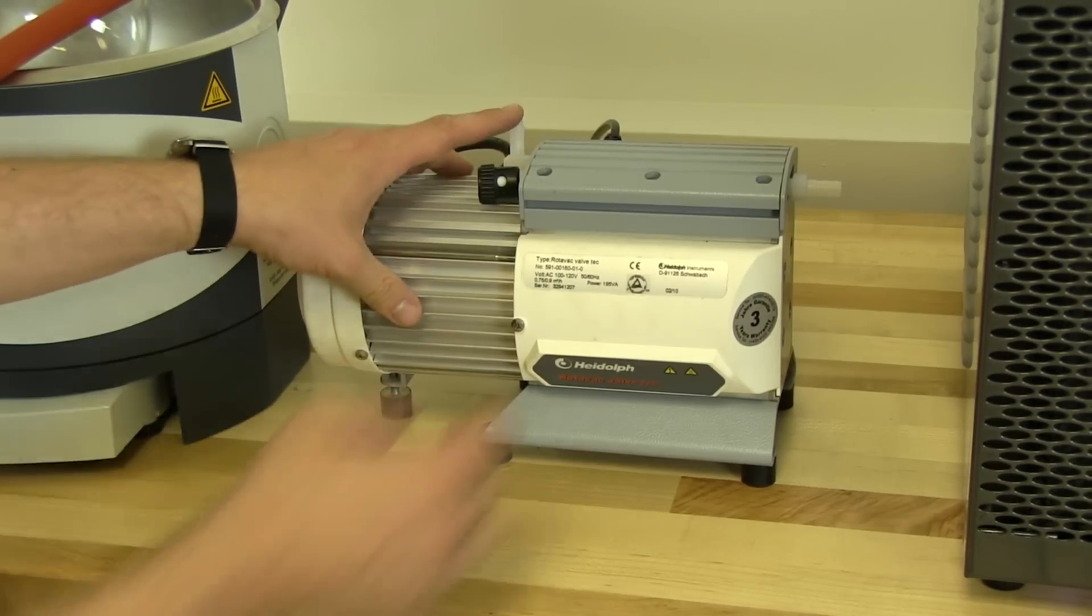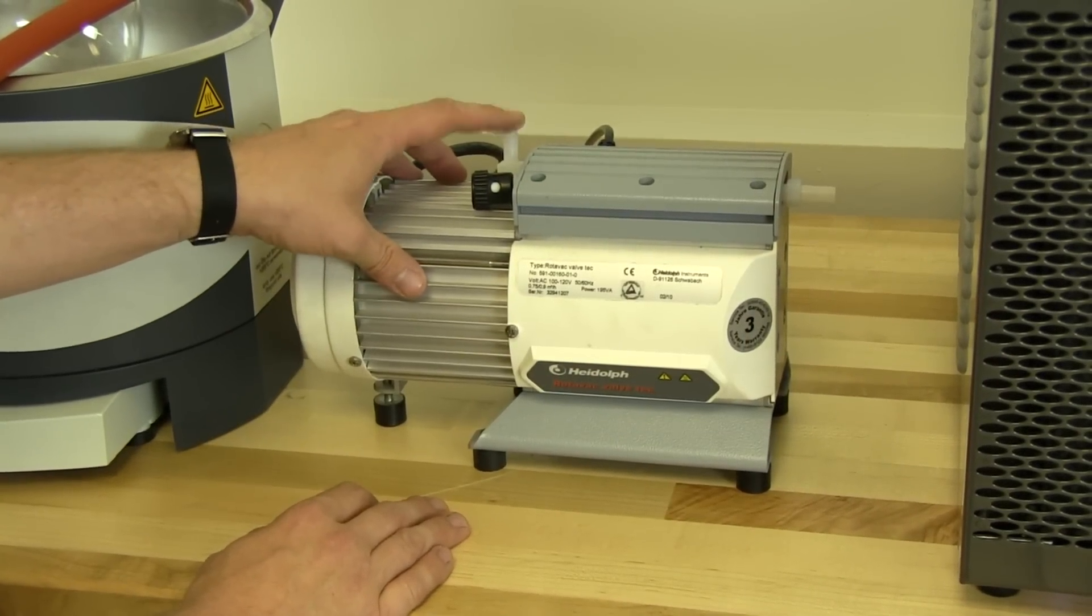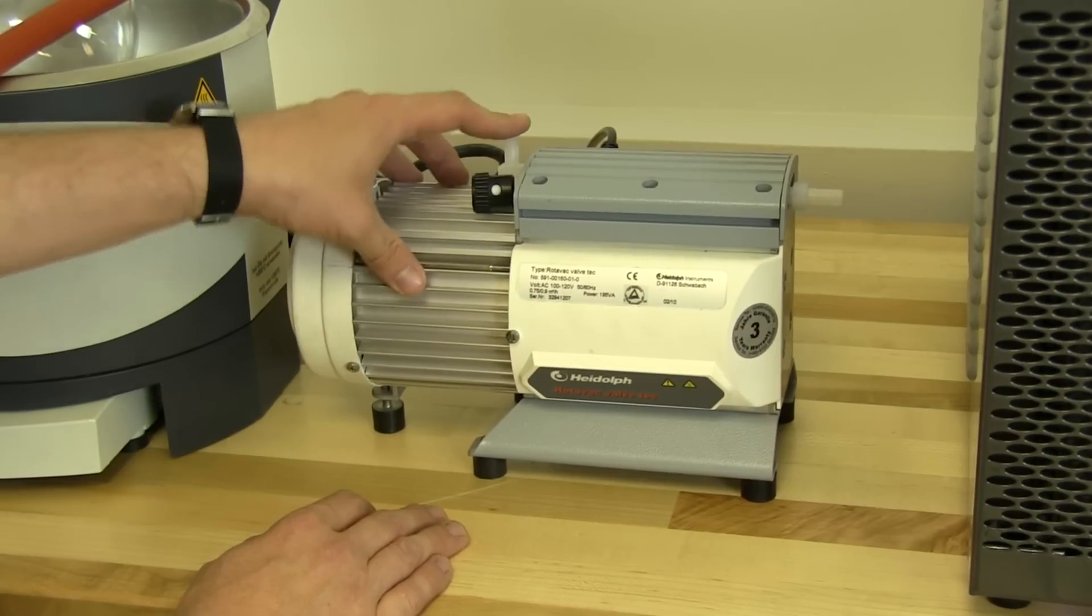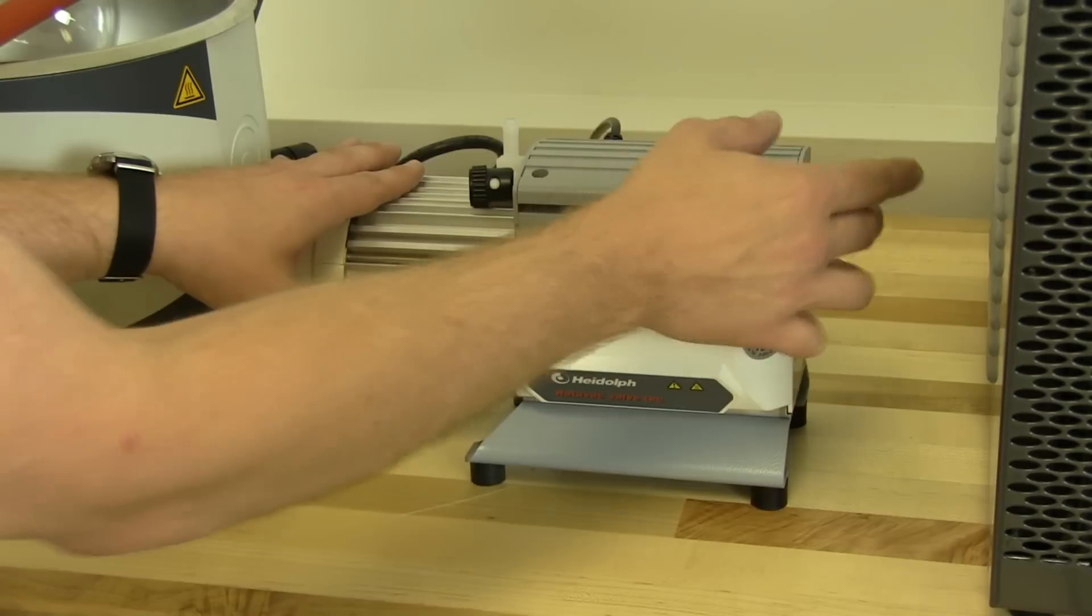So just turn the vacuum pump on if you're not sure, if it's not labeled which one is inlet and outlet. If it pulls your finger in gently, that's the inlet that connects to your glassware, and here's your outlet.